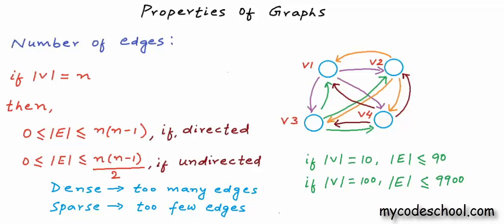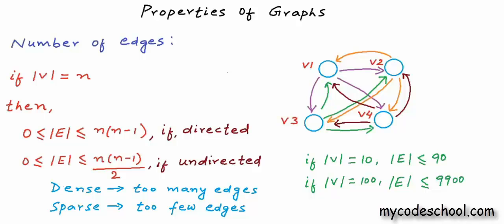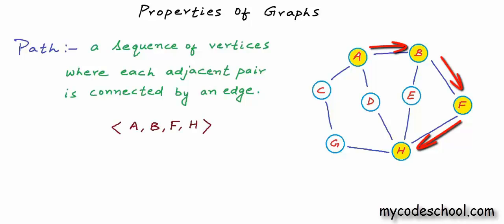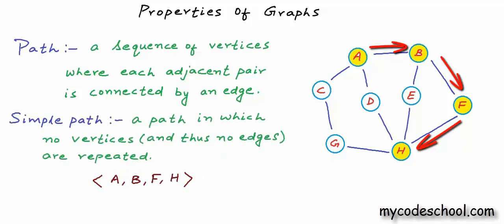The next concept is path in a graph. A path in a graph is a sequence of vertices where each adjacent pair in the sequence is connected by an edge. For example, the sequence of vertices a, b, f, h is a path in this example graph. In a directed graph, all edges must also be aligned in one direction — the direction of the path. A path is called a simple path if no vertices are repeated; and if vertices are not repeated, then edges will also not be repeated. So in a simple path, both vertices and edges are not repeated.